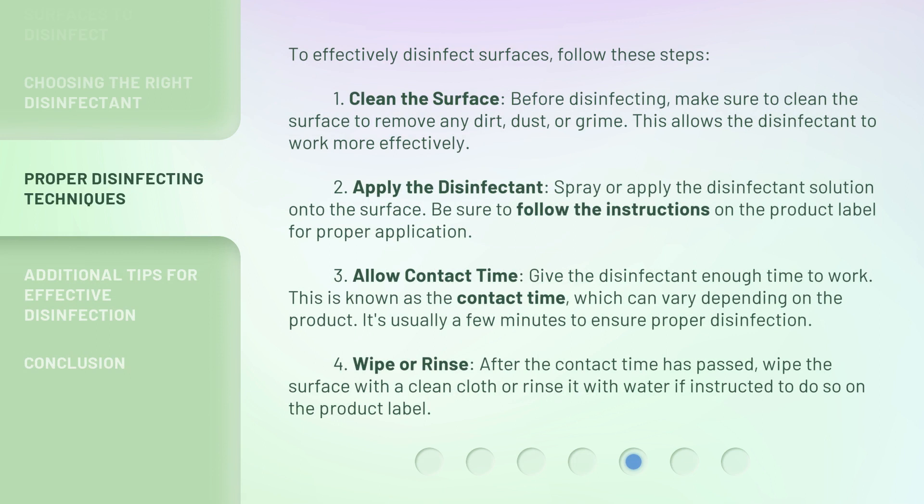To effectively disinfect surfaces, follow these steps. 1. Clean the surface: before disinfecting, make sure to clean the surface to remove any dirt, dust, or grime — this allows the disinfectant to work more effectively. 2. Apply the disinfectant: spray or apply the disinfectant solution onto the surface.